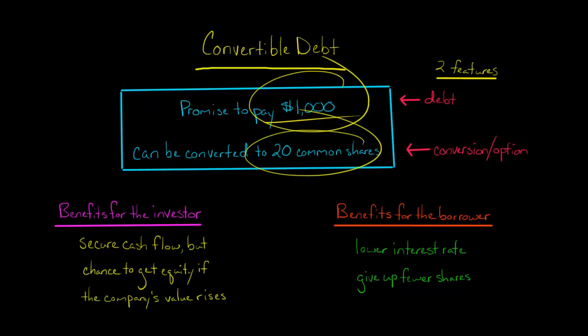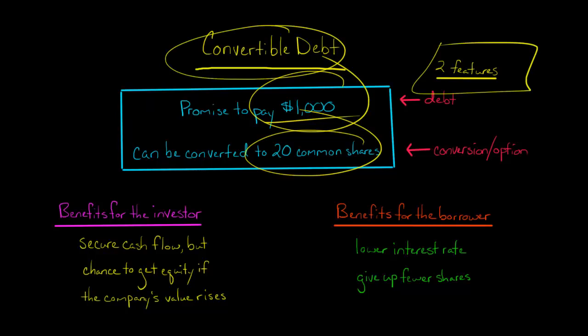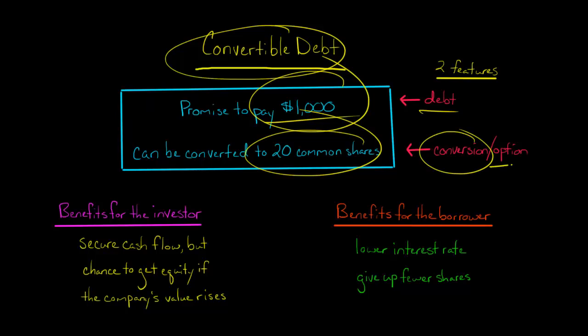Then you're no longer going to have any debt — they don't owe you any money, but you are now an equity holder. So basically convertible debt has two different features: there's a debt component, but then there's also a conversion component, which is basically like an option.